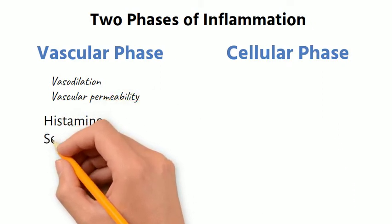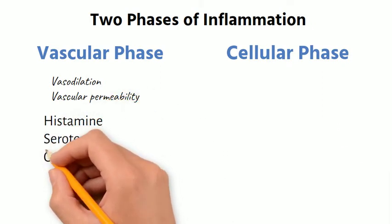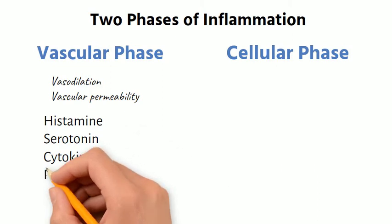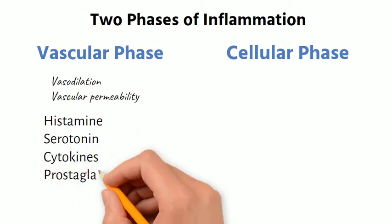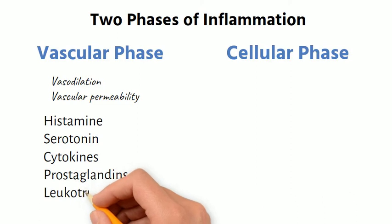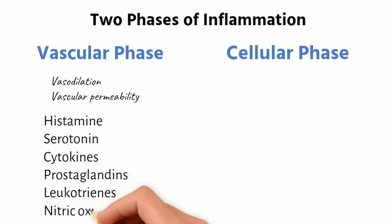Some of the mediators involved in the vascular phase of inflammation are histamine, serotonin, cytokines, prostaglandins, leukotrienes, and nitric oxide.